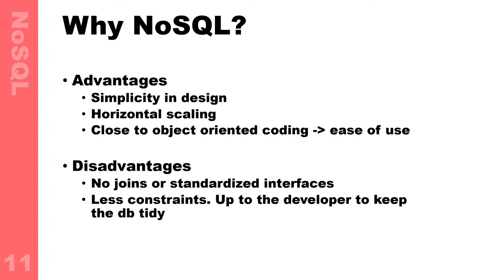You should be able to work freely with any type of database in the future. NoSQL is mostly used for real-time applications. The advantages: it's very simple in design, it has horizontal scaling so you can create as much as you want without too much trouble. MySQL is more rigid in design. NoSQL is close to object-oriented coding — it's easier because the data you're saving is mostly JSON, and we've been working with JavaScript objects all this time. Disadvantages include no joins and no standardized interfaces.